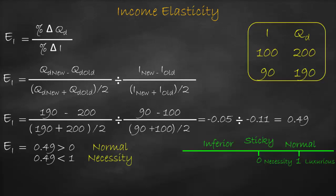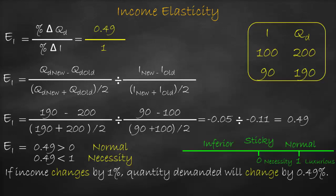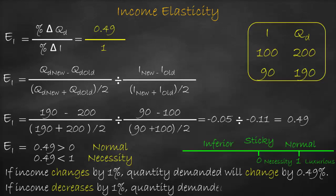We interpret it as: income elasticity equals 0.49 divided by 1, which equals 0.49. Therefore, if income changes by one percent, quantity demanded will change by 0.49 percent, or if income decreases by one percent, quantity demanded will decrease by 0.49 percent.